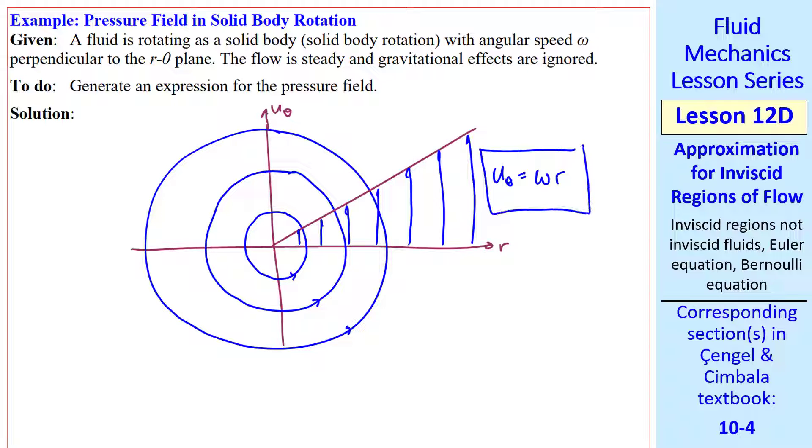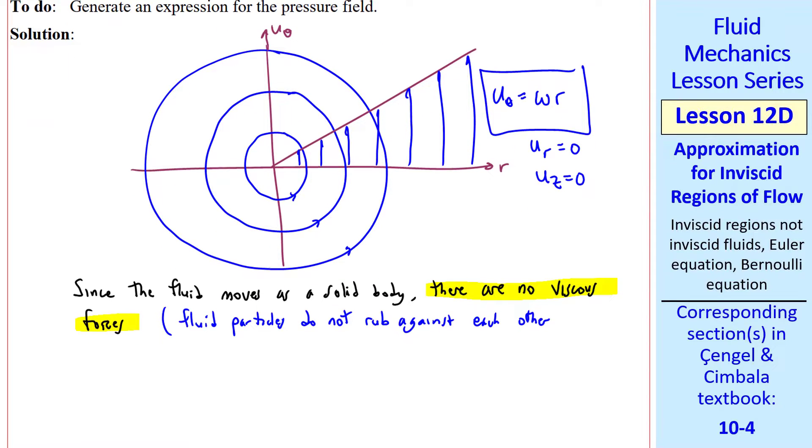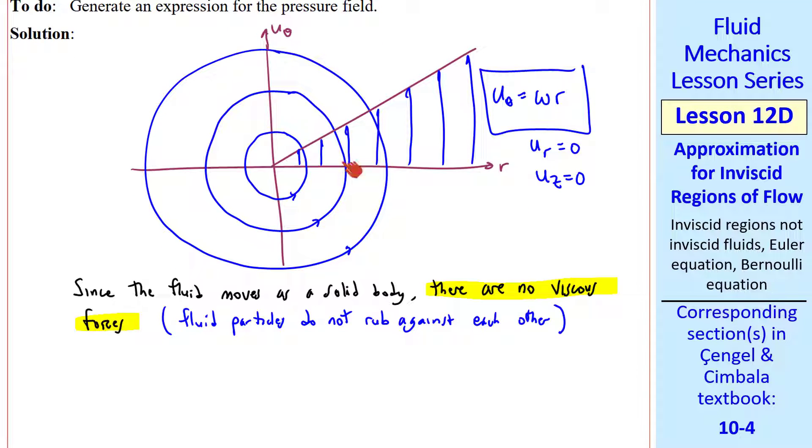In fact, we know the velocity field, u theta is omega r, u r equals zero, and u z equals zero, where z is into or out of the page. Since the fluid moves as a solid body, there are no viscous forces. In other words, fluid particles do not rub against each other. They all move in lock step as a solid body. So the viscous terms in the Navier-Stokes equation are exactly zero. This is truly an inviscid flow. The entire flow field is an inviscid region, but this is a rare case where it's inviscid everywhere.